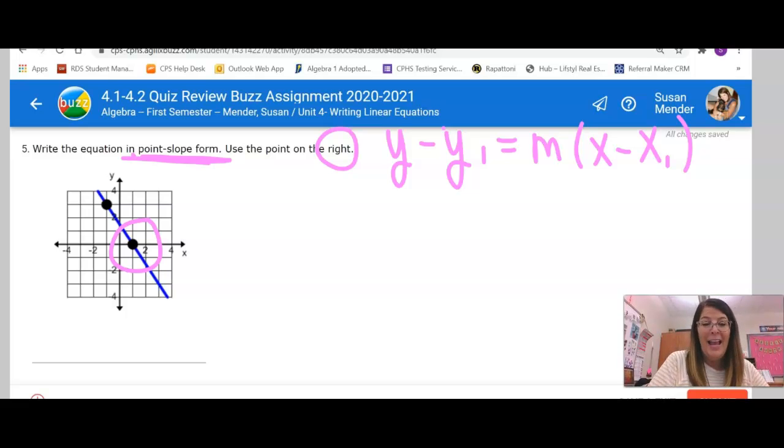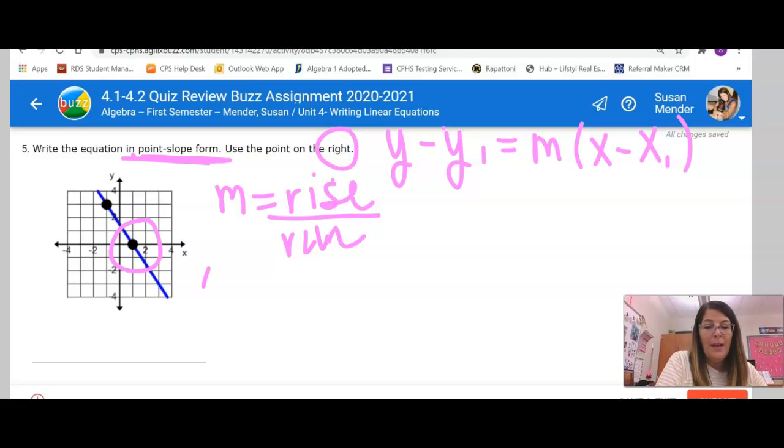So I need to be able to look at my picture and get a slope. I'm going to have to count the slope, rise over run, and I'm going to have to name that ordered pair. And after I do that, I'll be able to plug those things into my equation.